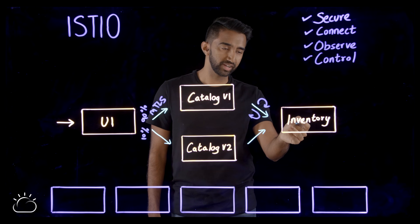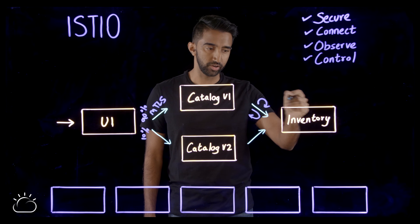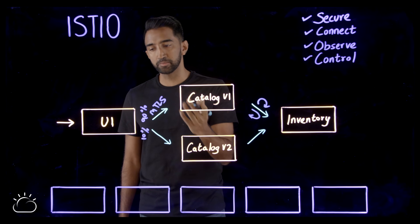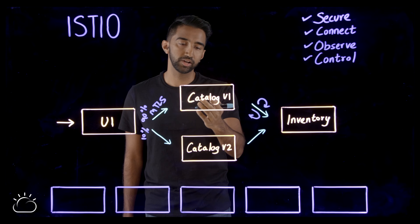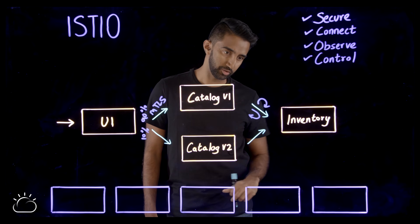But UI is not allowed to talk to inventory directly and rogue containers cannot talk to inventory service. You can get more granular than that and say that UI is allowed to make an HTTP GET request and catalog is allowed to make a POST request to inventory.